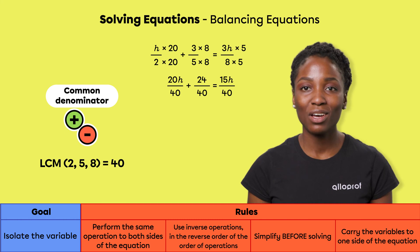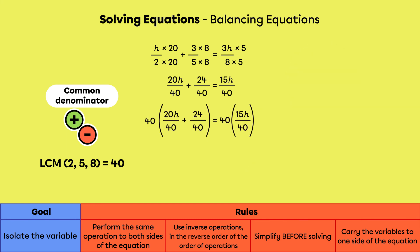Then we can remove the denominators. Why? By multiplying the two sides of the equal sign by 40, the denominators cancel each other out and only 20h plus 24 equals 15h remains.